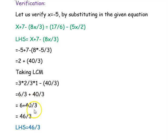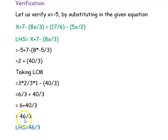The denominator 3 is common. Taking it out and adding the numerators gives 6 plus 40 divided by 3, which is 46 divided by 3. So our left hand side equals 46 divided by 3.